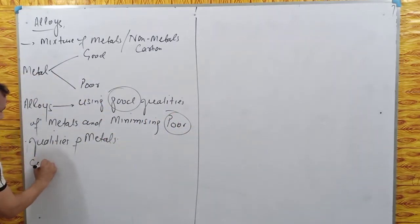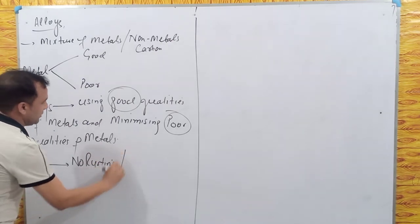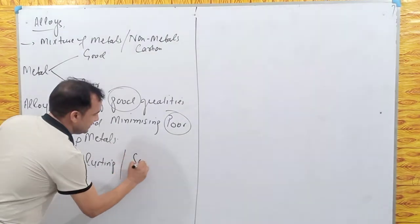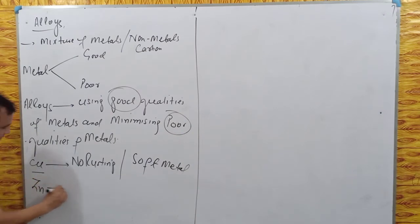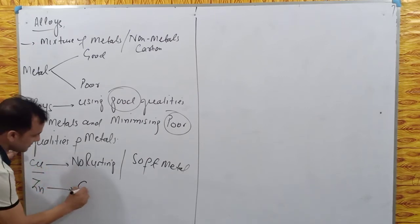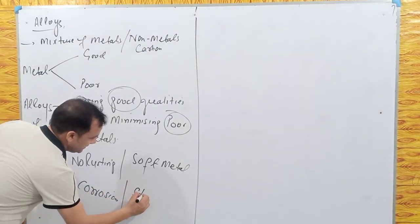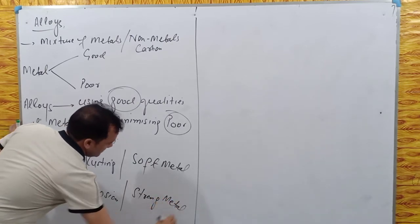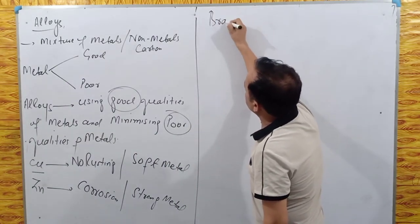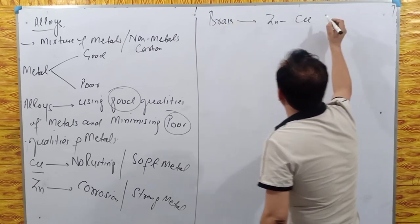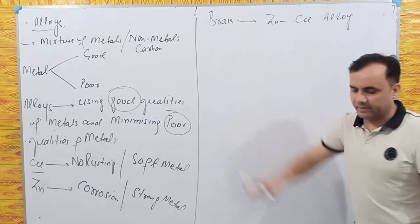For example, copper is a metal whose good quality is that there is no rusting, but its poor quality is that it is very soft and can be cut easily. Zinc's poor quality is corrosion — it reacts with oxygen in the air — but its good quality is that it is a strong metal. If you mix zinc and copper, the alloy formed is called brass.